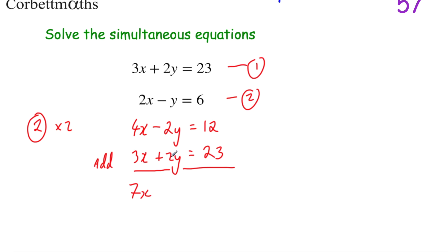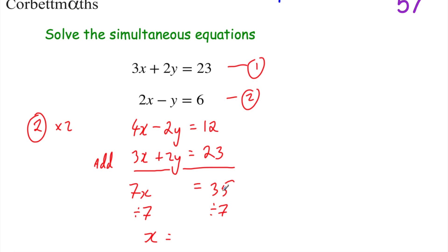Minus 2y plus 2y equals 0 — they cancel out. And 12 plus 23 equals 35. So we've got 7x = 35. That's fantastic — we can now divide both sides by 7. Dividing both sides by 7 gives us x = 35 ÷ 7 = 5. So we now know that x = 5.